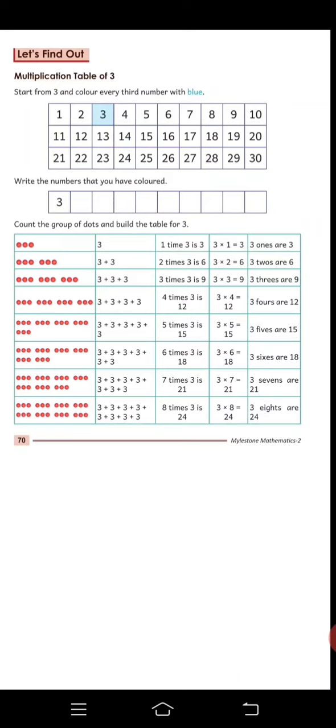So, 3 plus 3 plus 3 is equal to 9. And how many groups are there? 3. 3 multiply 3 is equal to 9. These are all these.